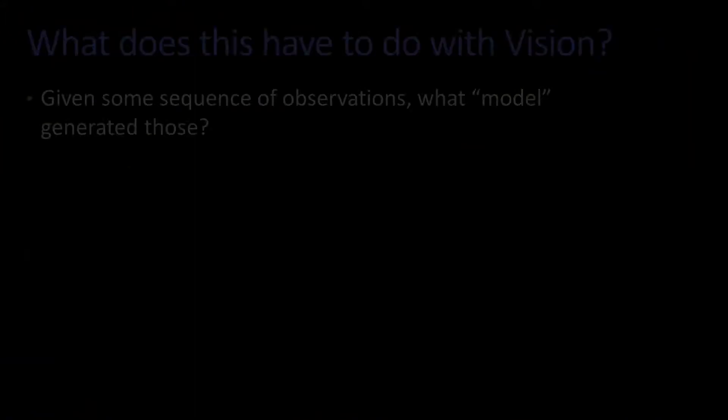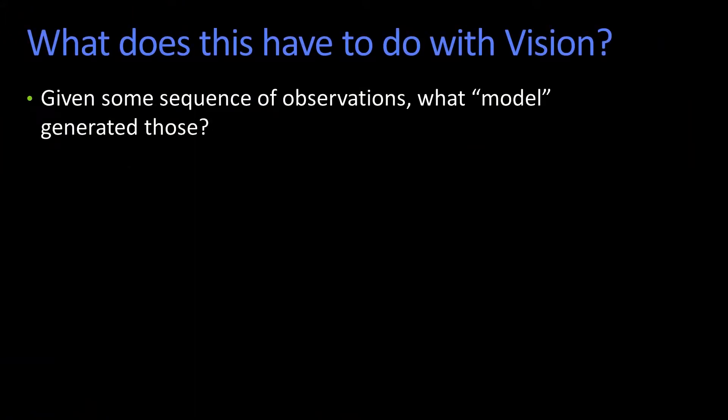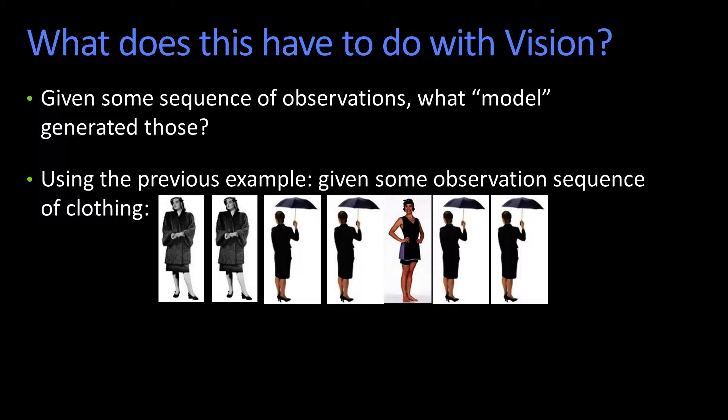This is about the time when you might say, what does this have to do with computer vision? What does this have to do with vision? I'm so glad you asked. Another way of phrasing what we've been doing is: given some sequence of observations, which model was most likely to have generated those? So using our previous clothing and weather example.